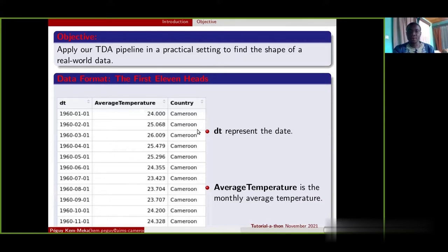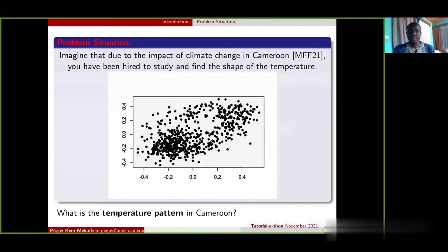In this tutorial we will mainly use some R packages like dplyr and TDA. The problem is the following. Just imagine that due to the impact of climate change in Cameroon, you have been hired to find the temperature pattern in Cameroon.